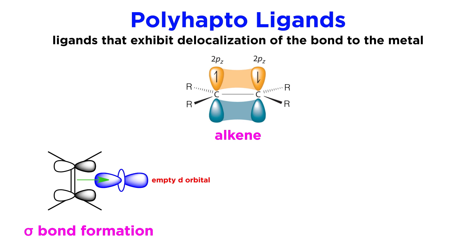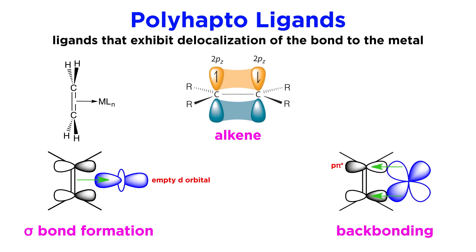However, the overlap that occurs is not very intuitive. The way we will depict this is with the p orbitals in the alkene sitting parallel to the dz² orbital on the metal, with overlap occurring in this fashion, where neither of these individual lobes are specifically overlapping, but rather the center of the pi bond is what is aligned. And because of the specific orientation, we will depict this in line notation with the arrow going from the center of the pi bond to the metal atom.